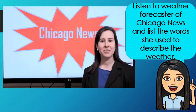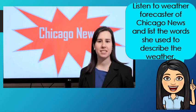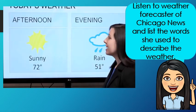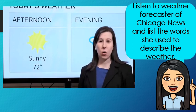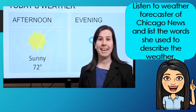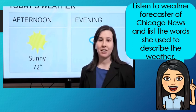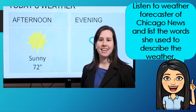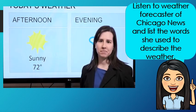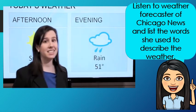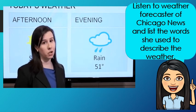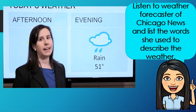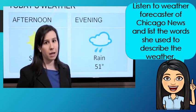Good afternoon. I'm Maria from Chicago News. Let's look at our weather for today. This morning it was cold and cloudy, but now it's beautiful outside. Right now it's 72 degrees. It's sunny, nice and warm. Later tonight it will rain and the temperature will go down to 51 degrees. And there's more crazy weather coming this week.